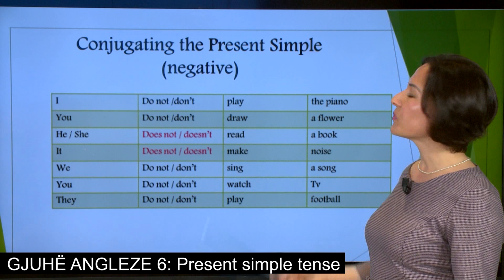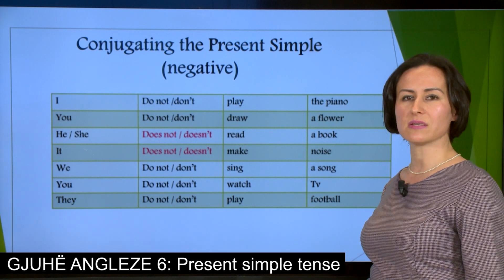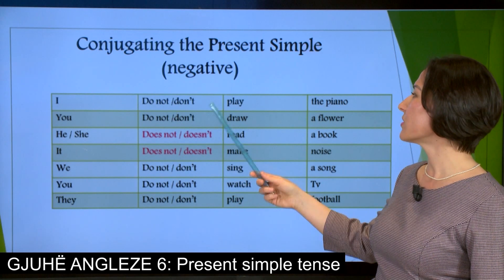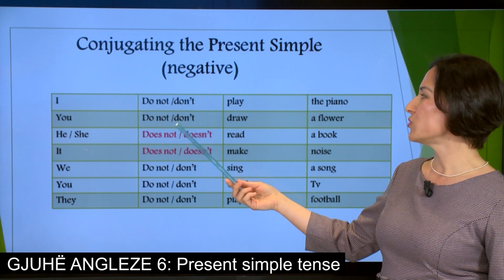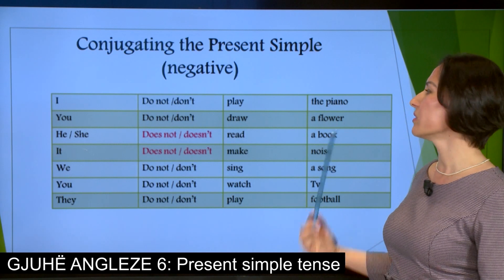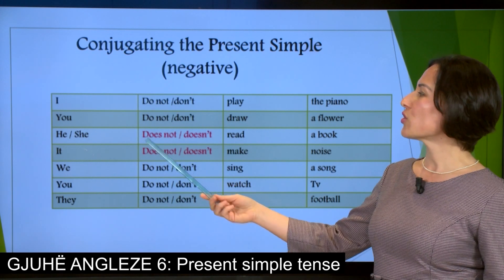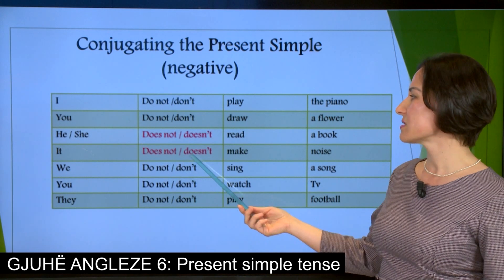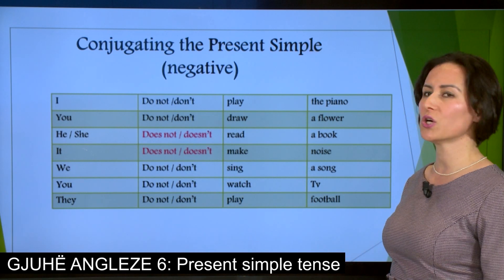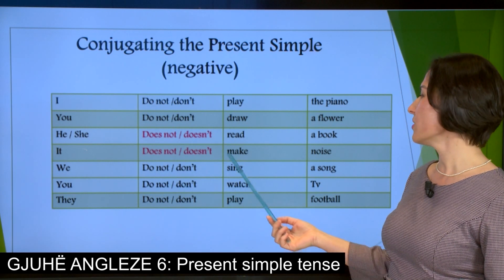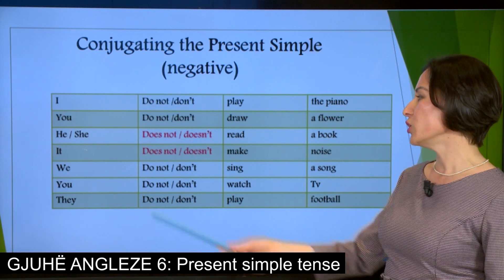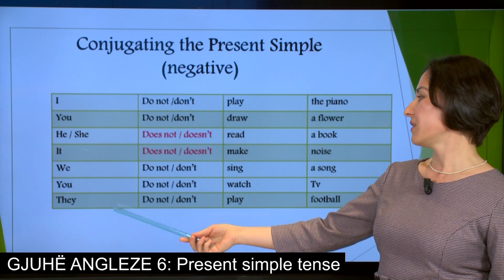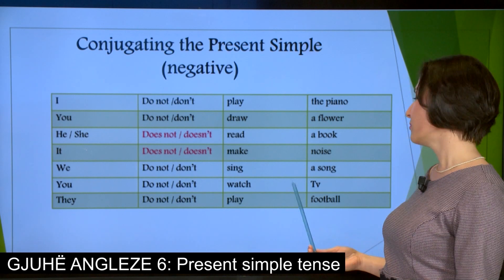Let us conjugate the present simple in the negative form: I do not / don't play the piano. You do not / don't draw a flower. He or she does not / doesn't read a book. It does not / doesn't make noise. We do not / don't sing a song. You do not / don't watch TV. They do not / don't play football.